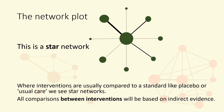Often, all interventions are compared against a common standard, such as placebo or usual care. This creates what is known as a star network, where all comparisons between interventions on the points of the star are based on indirect evidence only. It is not possible to assess inconsistency in a star network, so it is important to critically assess the studies to ensure that the common comparator represents the same intervention in all the studies, and that patient populations and outcome measures in the studies are comparable.